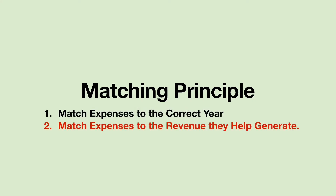In an earlier chapter, we talked about the matching principle. There are two parts to the matching principle, and in the earlier chapter, we just focused on part one. We did year-end adjusting entries to get expenses in the correct year. But I want to talk about part two a little bit in the context of payroll benefits.